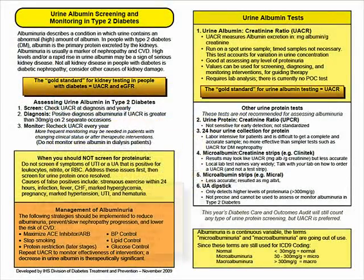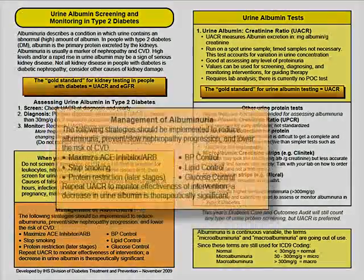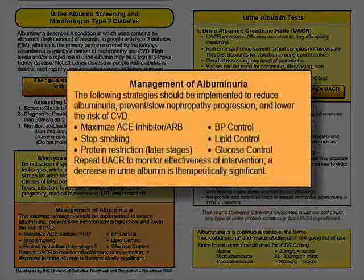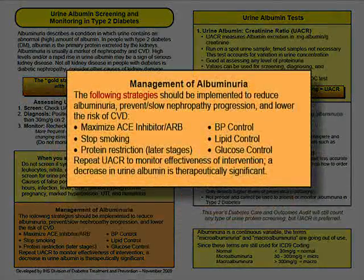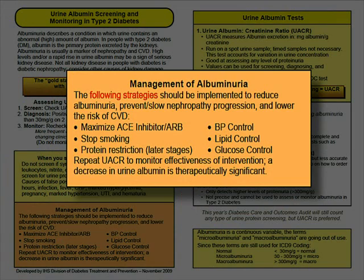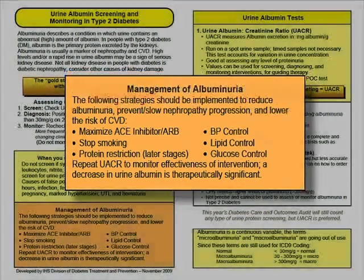Several strategies should be implemented to reduce albuminuria, prevent or slow nephropathy progression, and lower the risk of heart disease. These include controlling blood glucose, blood pressure, and lipids.